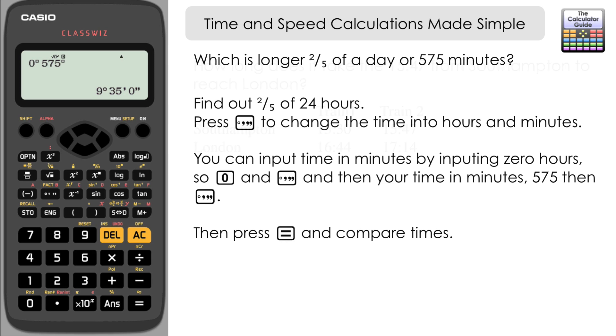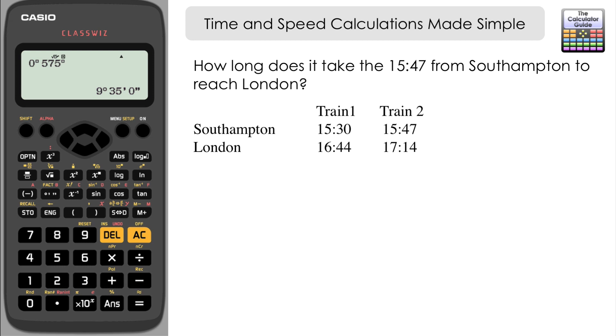The second way in which this time calculation button can help us out is if we have a timetable problem. We have a timetable here showing trains from Southampton to London. The question is: how long does it take the 15:47 from Southampton to get to London? We know that it departs Southampton at 15:47 and arrives in London at 17:14. So what we're really after is the difference between these two times.